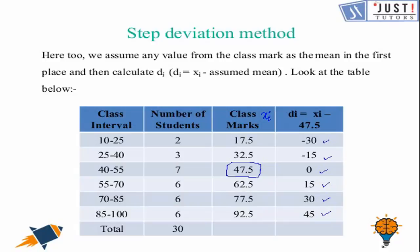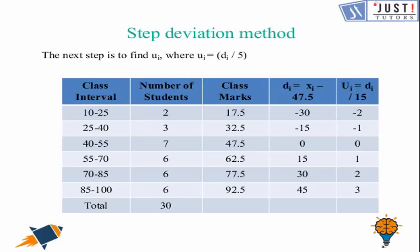So the next step is to find the ui's which are di divided by 15. Oh that's a little typing error there, that has to be a 15. So the ui's are found out by dividing the di column by 15 which is the class width. So 15 is not just a random number, we always divide the di's by the class width.